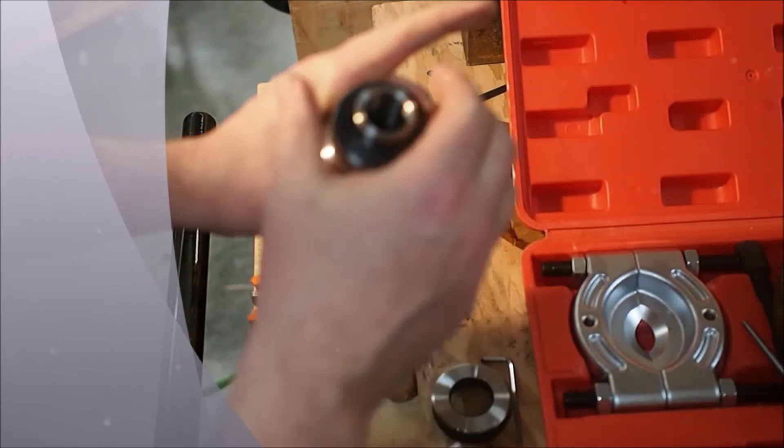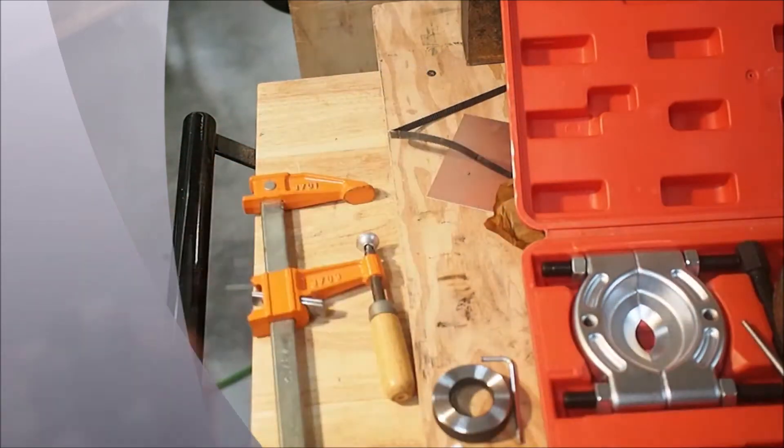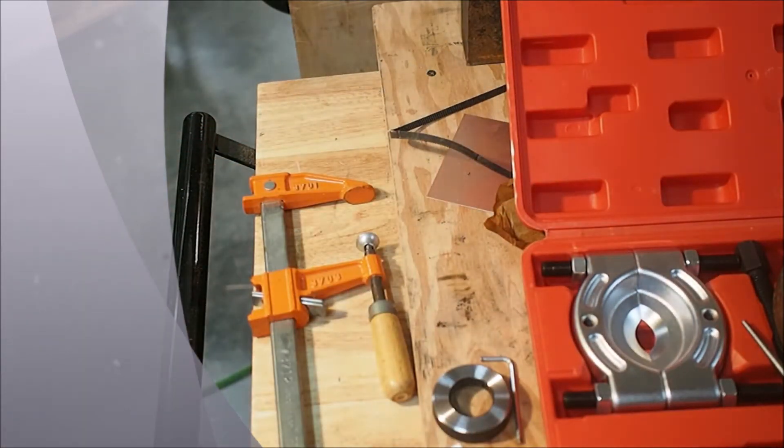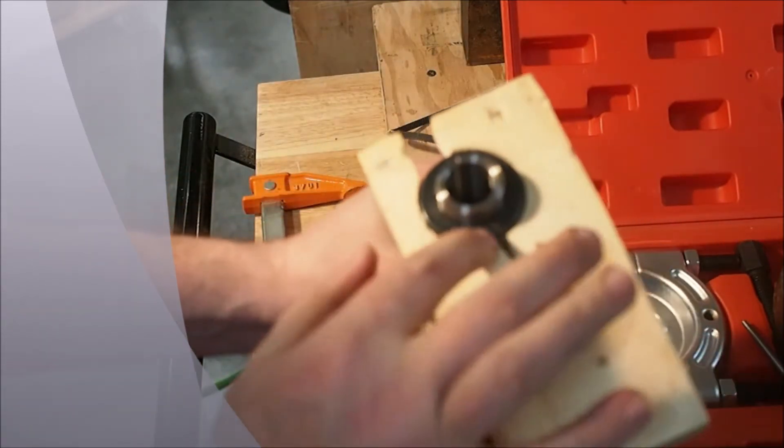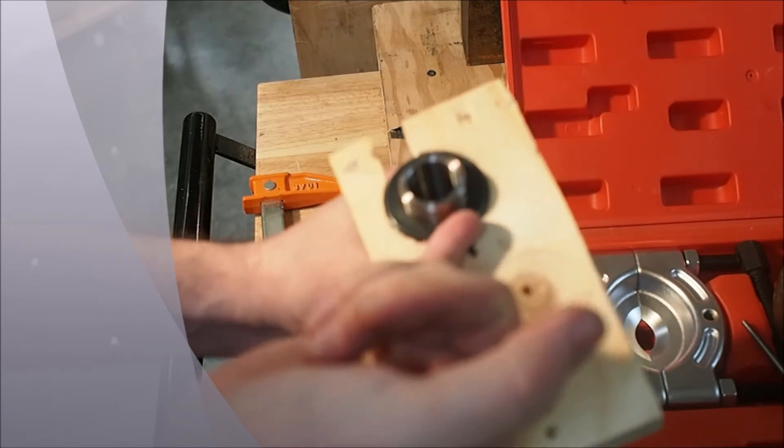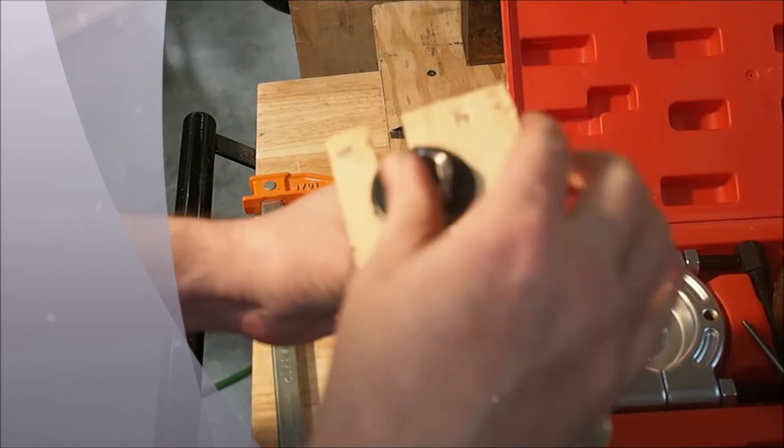But the first thing that I actually did was to pop this out, and so I cut this here and clamped it in the vise, and then I took a punch and gently tappa tappa tappa that out.